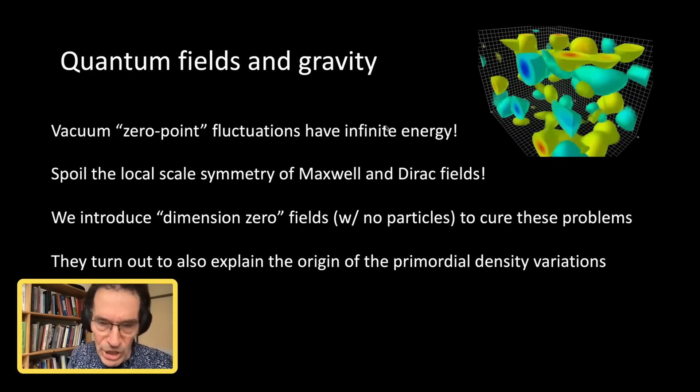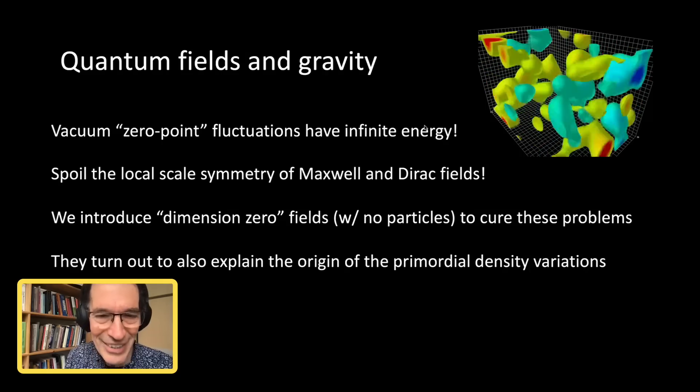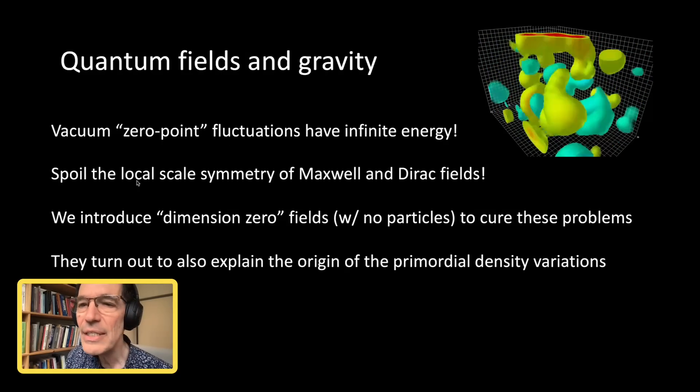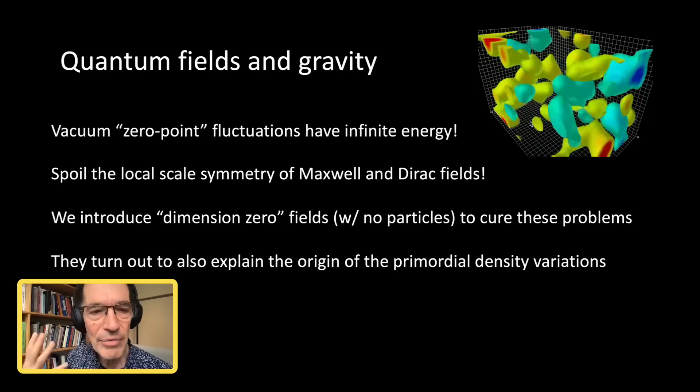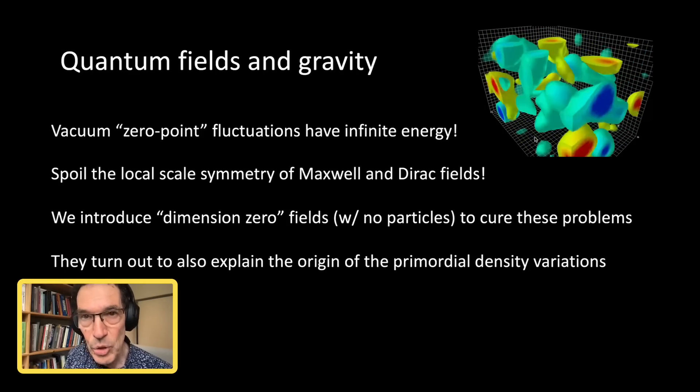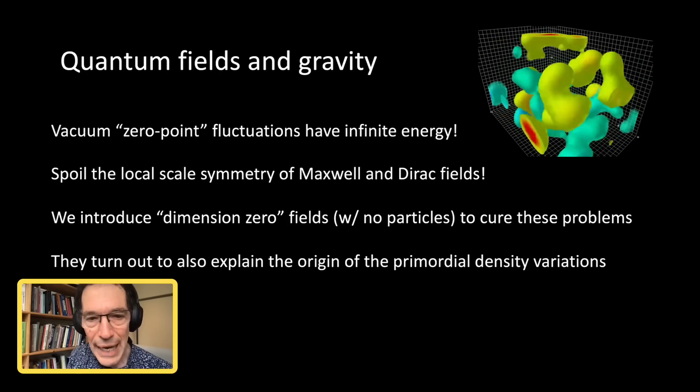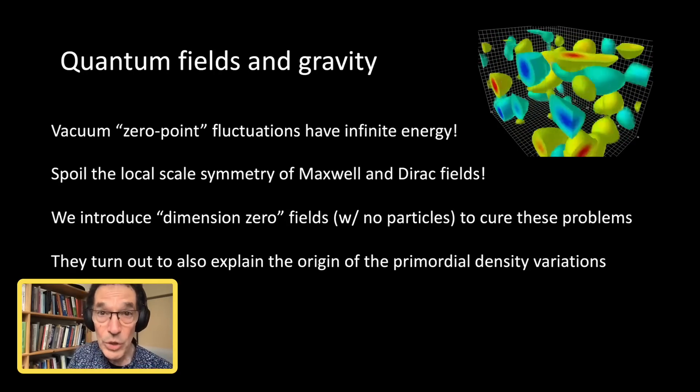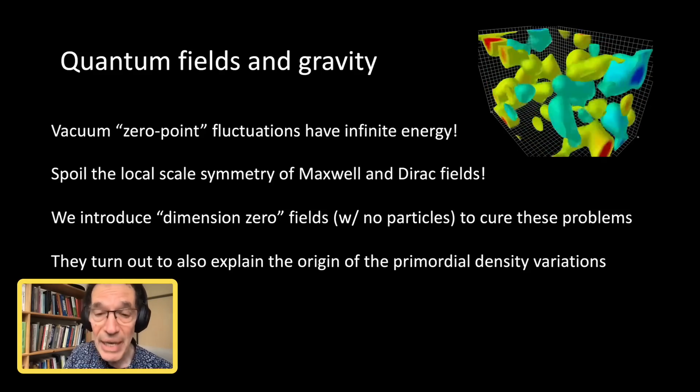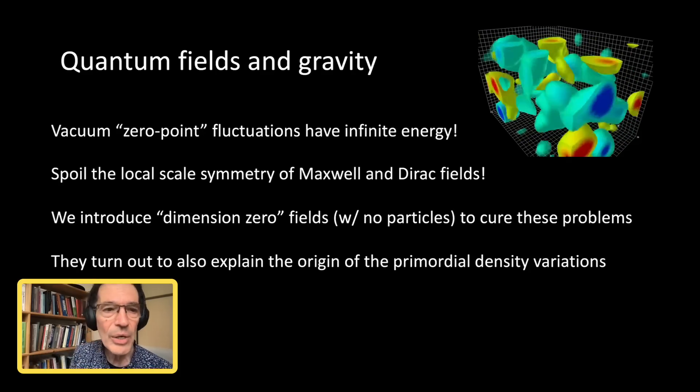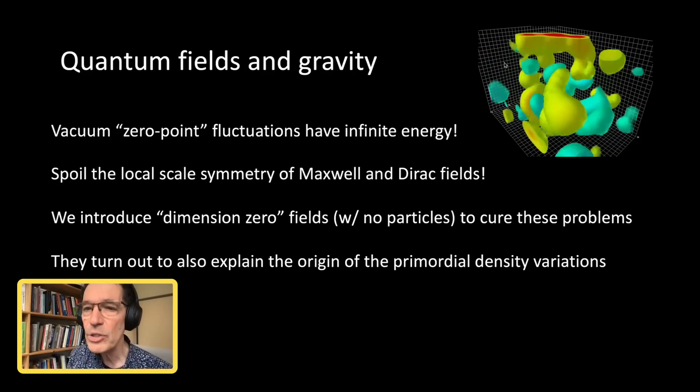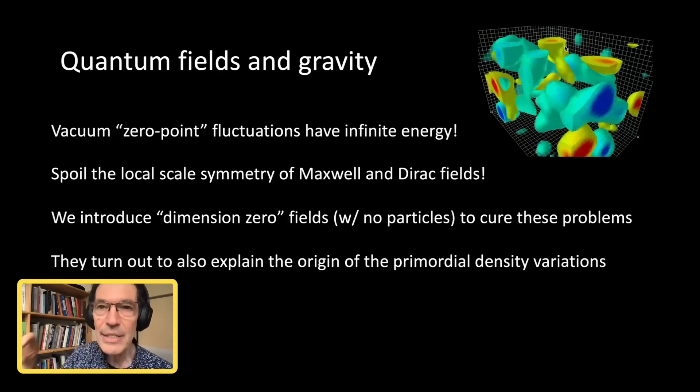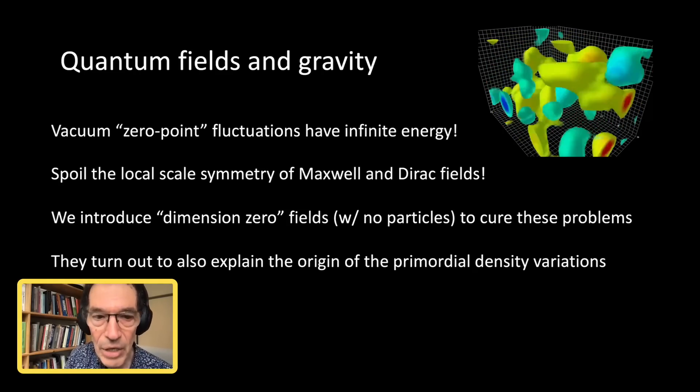So people cheat in various ways. They subtract that infinity in certain ways. But there's a further problem, which is that these zero point fluctuations in the vacuum spoil this beautiful local scale symmetry of the Maxwell and Dirac theory, which we needed in order to make sense of the Big Bang singularity. So these vacuum fluctuations seem to prevent us describing the Big Bang singularity as a mirror.